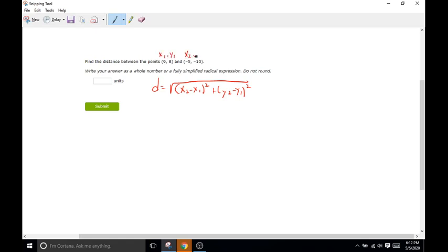So we'll do x1, comma y1, x2, comma y2. So we'll do equals the square root of x2 is going to be negative 5 minus x1, which is 9 squared plus y2 is going to be negative 10 minus y1 is going to be 8 all squared.